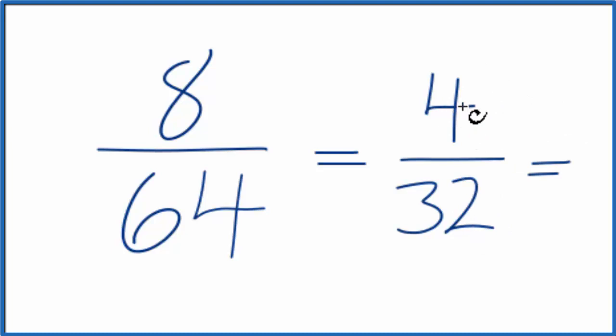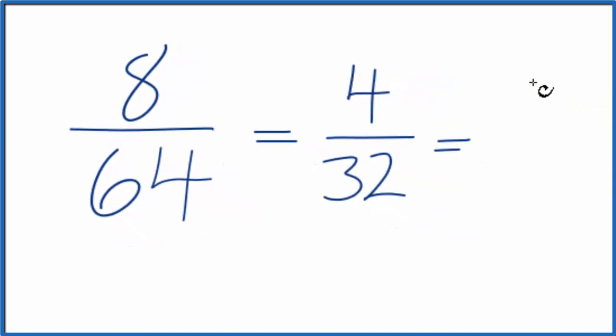If we divide the top by 4, 4 divided by 4 is 1, and 32 divided by 4 is 8. We get the same answer we got last time. This is Dr. B simplifying the fraction 8/64.